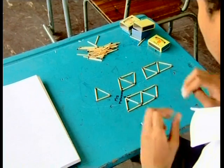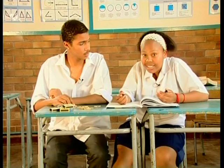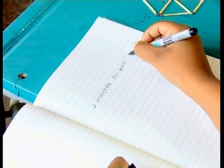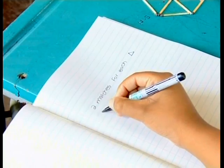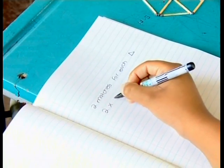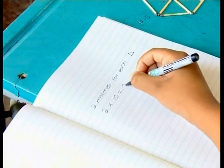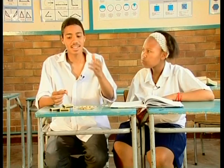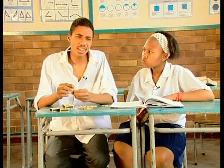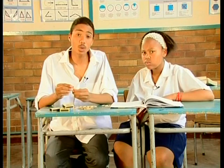How about this? We used two matchsticks for every triangle we added on, so it must be two matchsticks times ten, which equals twenty. You're almost there. Just remember though, that the first triangle had three matches, not just two. Oh yeah. I think that there will be twenty-one matches.